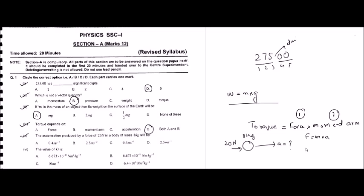Rearranging, acceleration equals force divided by mass. Putting in the numbers: 20 divided by 8 gives 2.5, and the unit of acceleration is meters per second squared. Option A (0.4) is wrong. Option B (2.5 m/s²) is correct. Option C (0.5) is wrong. Option D has the same magnitude but uses m/s, which is not the unit of acceleration. So option B is the correct answer.